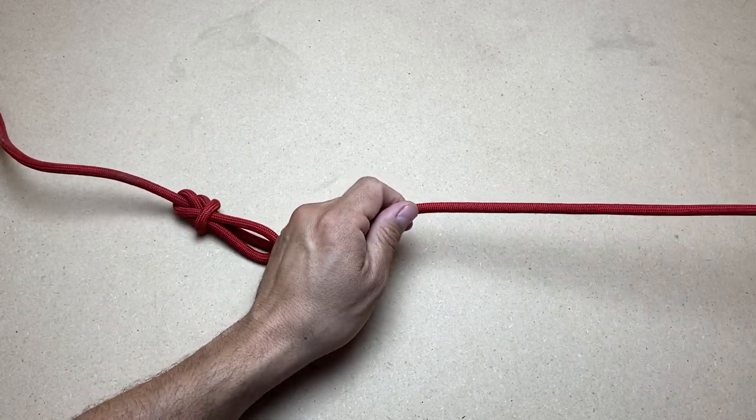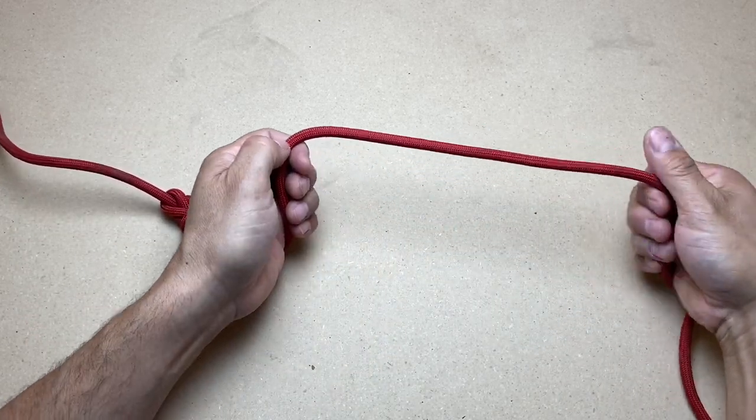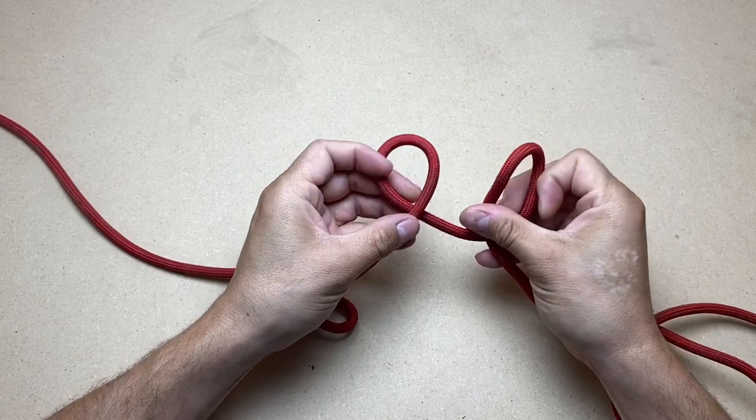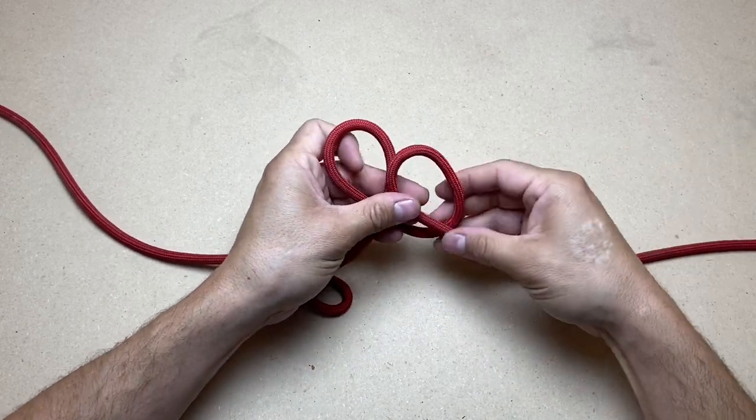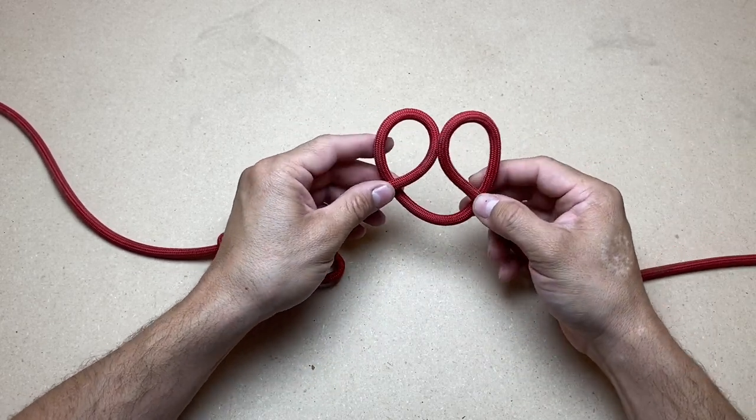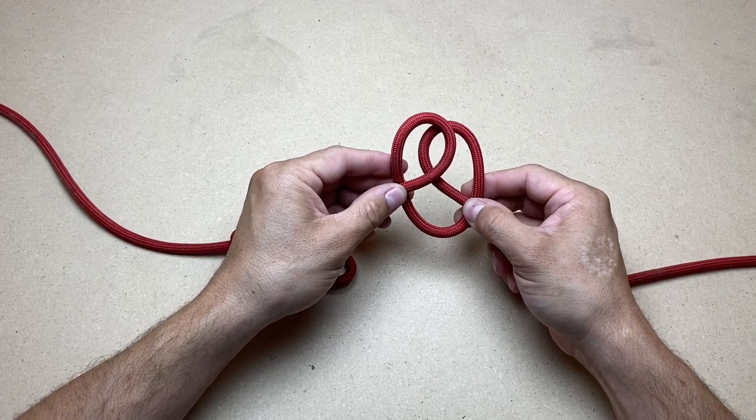Now if you want it 90 degrees, you're going to do the same thing with your type of loop that you start with. It doesn't matter which one you put on top, but you're going to put one on top of the other and create a window right there in the middle.